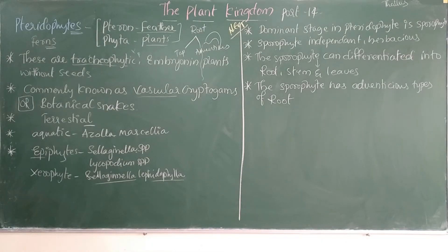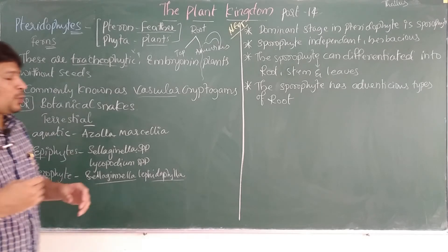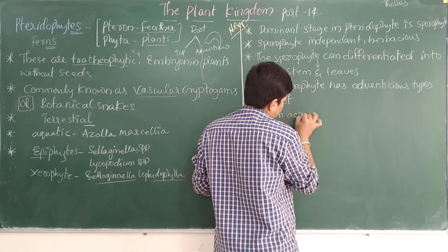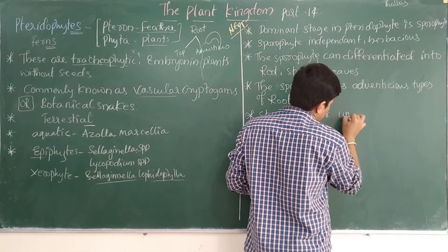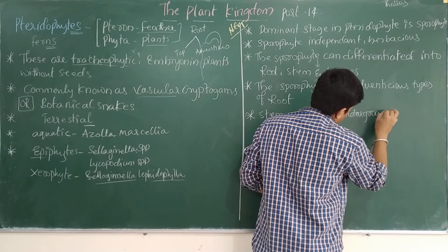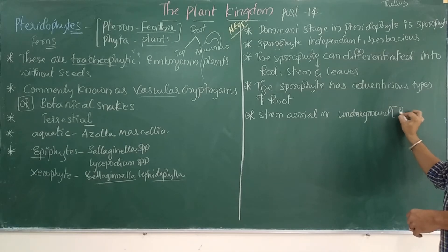Regarding the stem, it may be aerial or underground. If the stem is underground, we use the technical term 'rhizome' for that. Ginger is an example of a rhizome — it is present just below the ground. Similarly, in pteridophytes, the stem may also occur as a rhizome.